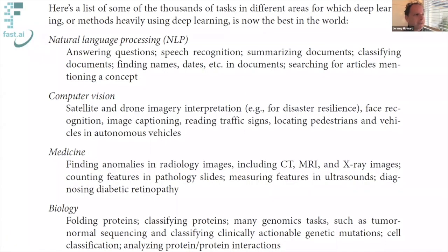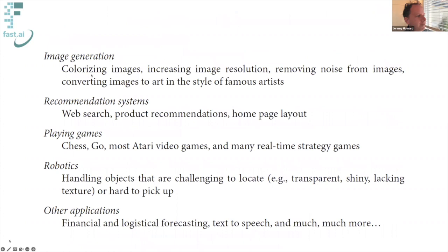Deep learning at this point is the state-of-the-art approach to a very wide variety of things — natural language processing, computer vision, medicine, biology, generating images, recommendation systems, playing games, robotics, and so forth. Some of these you might have heard about — for example, when a deep learning algorithm beat the world's best player at Go, that got a lot of attention.